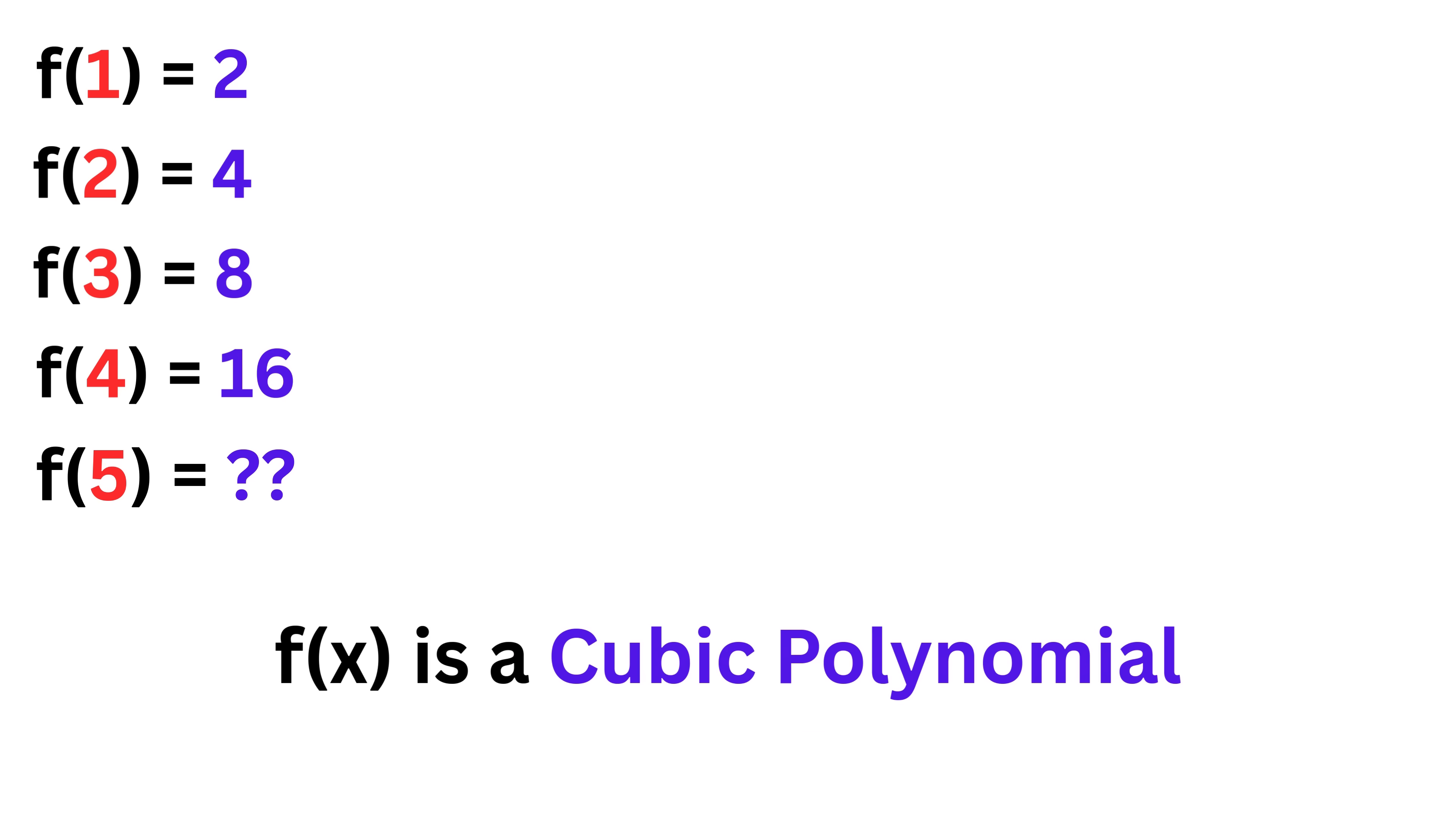This is an outstanding problem. We are given that f is a cubic polynomial, which means it is of the form ax³ + bx² + cx + d. Then we are also given that when x is 1, we get f(1) as 2; when x is 2, we get f(2) as 4; when x is 3, we get 8; and when x is 4, we get 16.